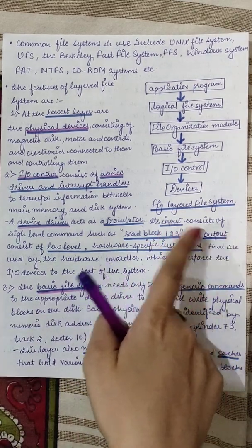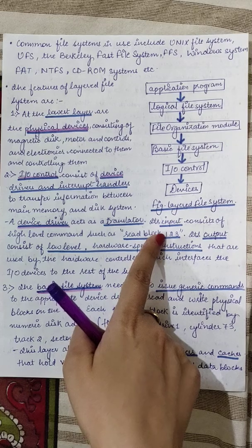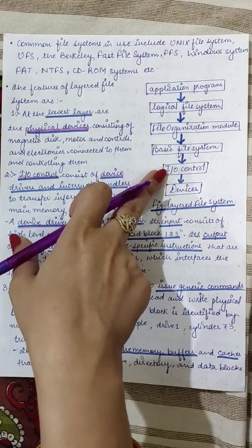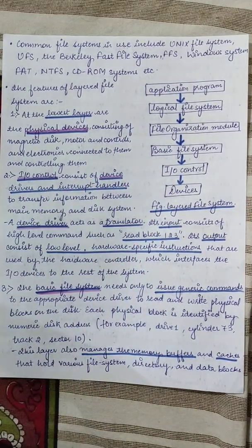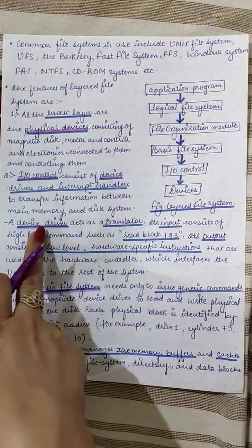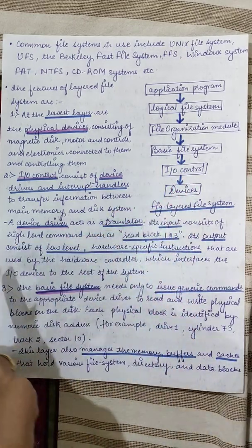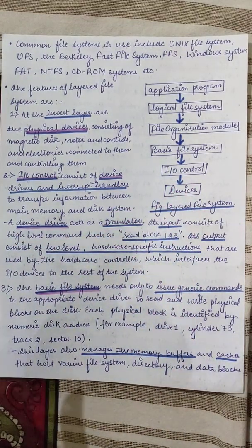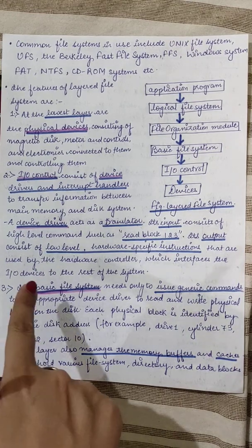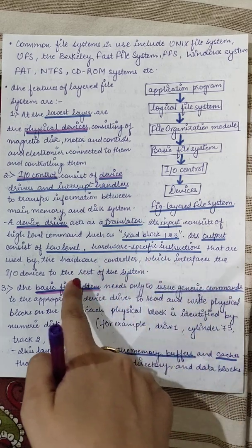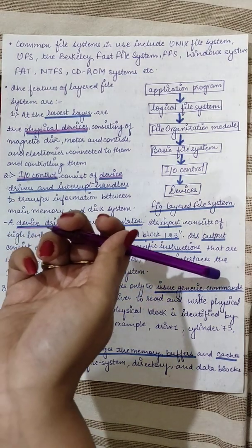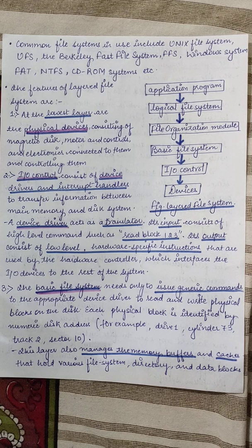Its input consists of a high-level command such as 'read block number 123.' When such a command arrives from the basic file system, the device driver passes that command to the devices at the lower level, and it is converted into hardware-specific instructions used by the hardware controller, which interfaces the I/O devices to the rest of the system.